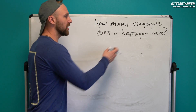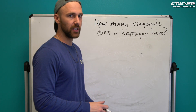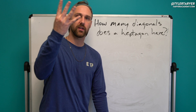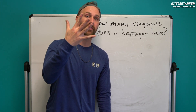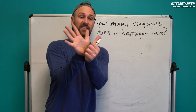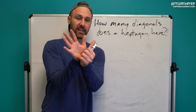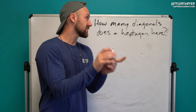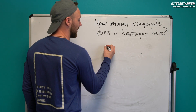So first off you need to know what is a heptagon. So you know triangle is three, quadrilateral is four, pentagon is five, hexagon is six — because they have both of the X's in it — and then a heptagon is seven. So you need to draw a seven-sided figure.